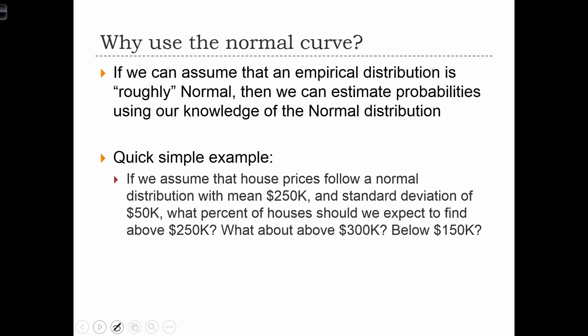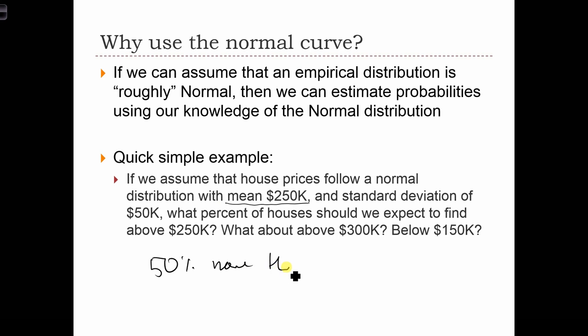we can now ask or answer: what percent of houses should we expect to find above $250,000? Well, if $250,000 is the mean and the houses are normally distributed, then we should expect to find 50% of houses priced more than $250,000. What about above $300,000?